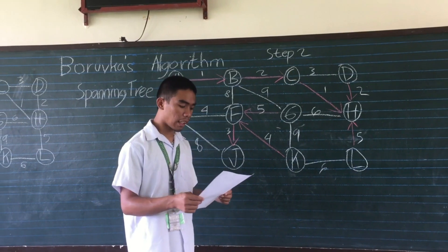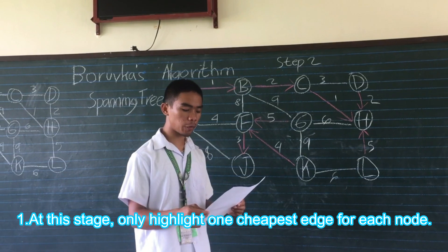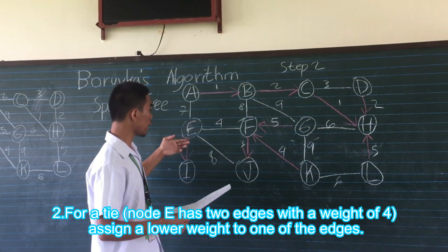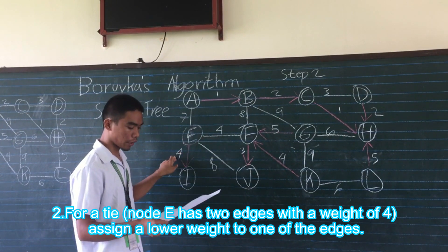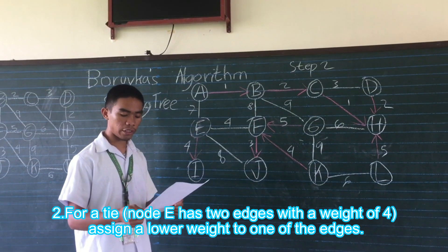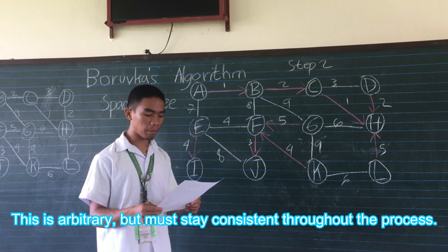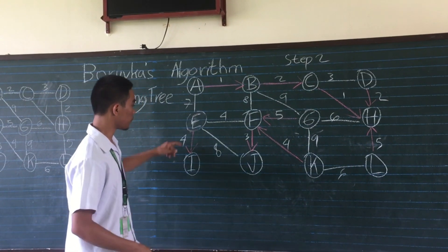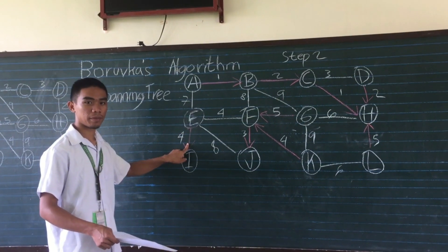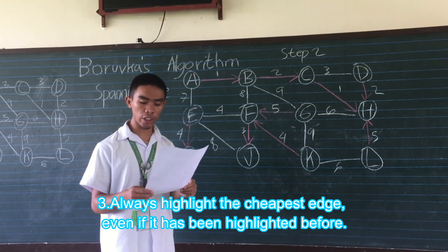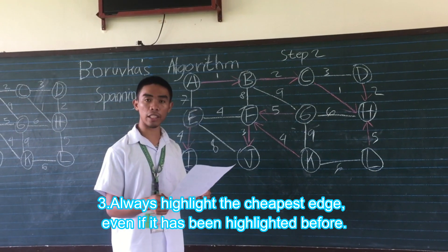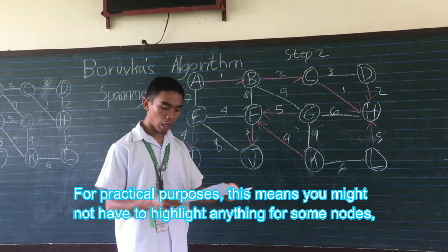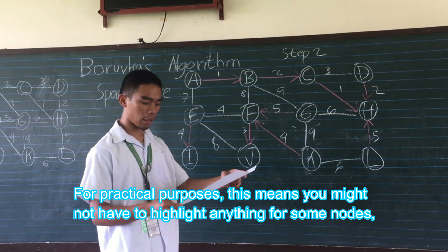For the Step 2 guidelines: First, at this stage only highlight one cheapest edge for each node. Guideline 2: for a tie — node A has two edges with a weight of 4 — assign a lower weight to one of the edges. This is arbitrary but must stay consistent throughout the process. For example, make the edge to the left the lowest weight, colored pink. Guideline 3: always highlight the cheapest edge even if it has been highlighted before. Do not choose the edge with the next lowest weight.